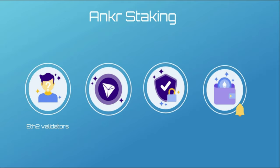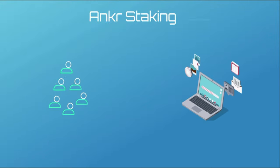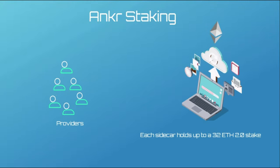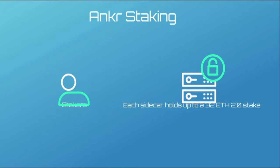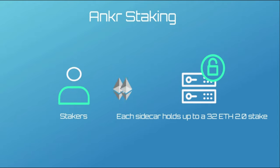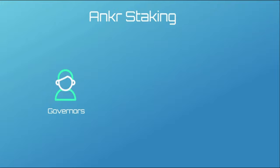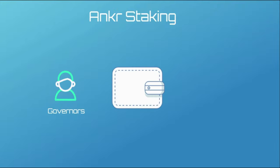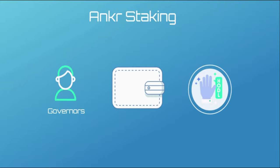Therewith, Anchor has developed a unique staking model that involves three parties. Providers — providers of the computing power that supports sidecars running on an Ethereum 2.0 node; each sidecar holds up to a 32 ETH 2.0 stake. Providers can use their hardware or deploy a node on Anchor. Stakers — anyone that requests staking services from a provider; they stake ETH and don't host a node. Governors — anyone that holds ANKR tokens in a supported wallet is considered part of the platform's governance.